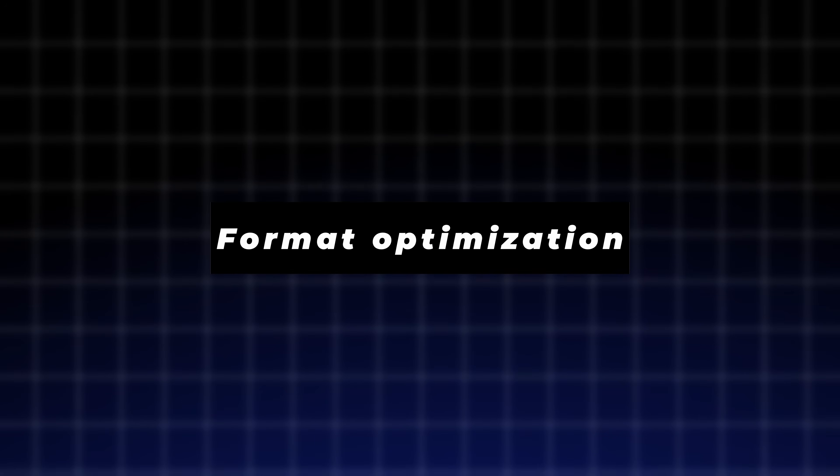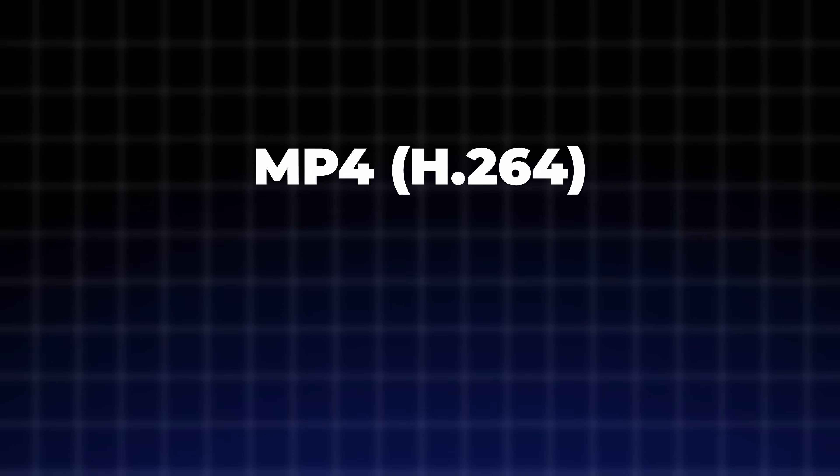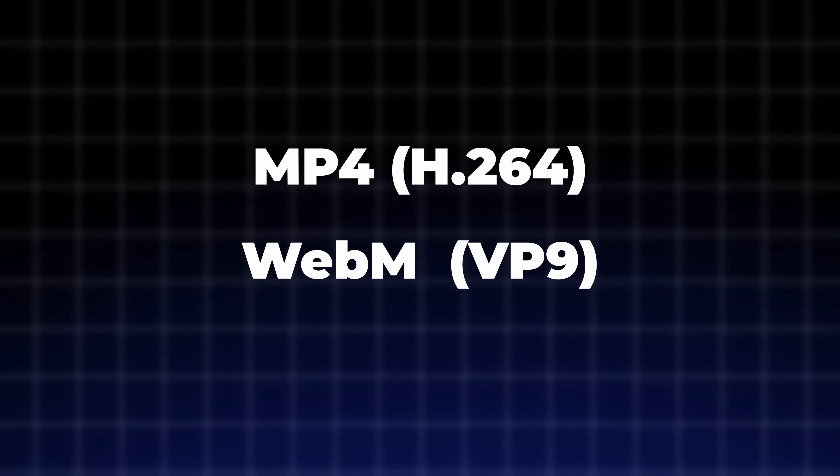Let's start with the most obvious one. The two best formats to use for videos on a website are MP4 H.264 and WebM VP9. These are widely supported formats when it comes to online videos, ensuring that the video will play in most web browsers and on most devices.